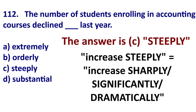So the answer is 'steeply.' Steeply means significantly, sharply, dramatically. You could use the adjective and say there was a steep decline in the number of students, or the number declined steeply, which means a lot — significantly.